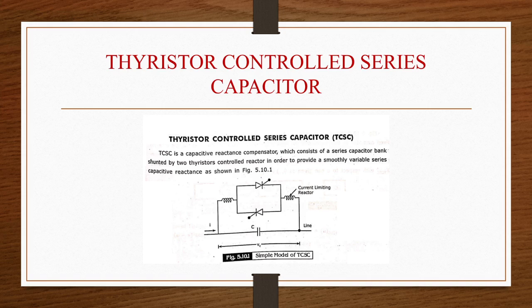FACTS technologies will open up new opportunities for controlling power and enhancing the usable capacity of present, new and upgraded lines. These opportunities will arise through the ability of FACTS controllers to control the interrelated parameters that govern the operation of transmission systems, including series impedance, shunt impedance, current, voltage, phase angle, and the damping of oscillations at various frequencies.